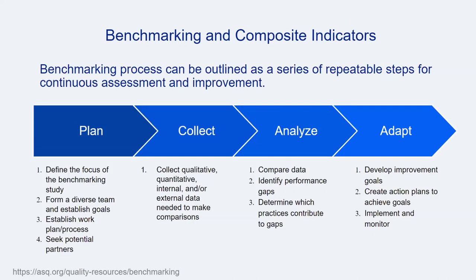This is one example of a benchmarking process in which a series of repeatable steps is followed for continuous assessment and improvement. In Step 1, focused on planning, the focus and plan of a benchmarking study are decided upon. In Step 2, data are collected to make comparisons. Then the data are compared and gaps in performance discerned. Finally, in the ADAPT stage, goals for improvement are developed along with action plans for achieving those goals. Having a systematic benchmarking process increases transparency, allows for repeatability, and makes it easier to pinpoint where adjustments may reduce labor intensity.